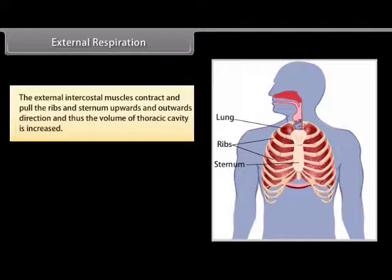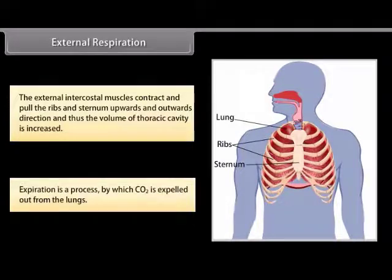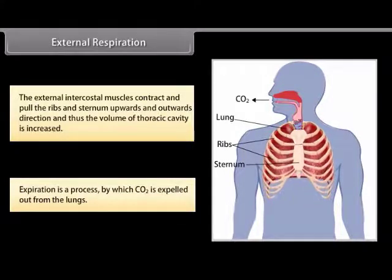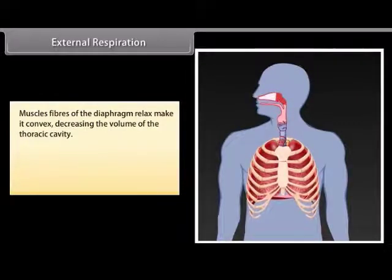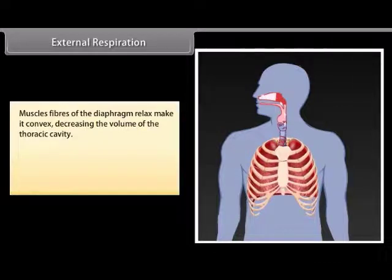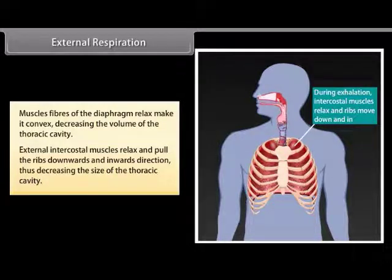Thus the volume of the thoracic cavity is increased during inspiration. Expiration is the process by which CO2 is expelled out from the lungs. The muscle fibers of the diaphragm relax, making it convex, decreasing the volume of the thoracic cavity. The external intercostal muscles relax and pull the ribs downwards and inwards, thus decreasing the size of the thoracic cavity.